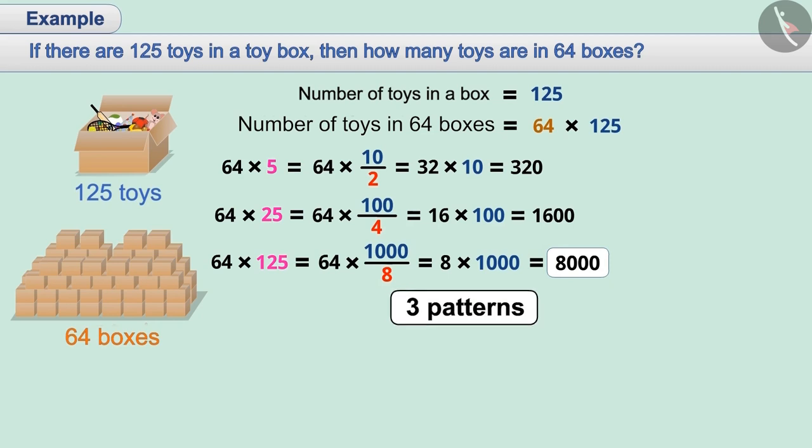Here, we can see three patterns. In the first pattern, 5, 25, 125, etc., we get the next number by multiplying the number with 5. In the second pattern, 10, 100, 1000, etc., we get the next number by multiplying the number with 10.